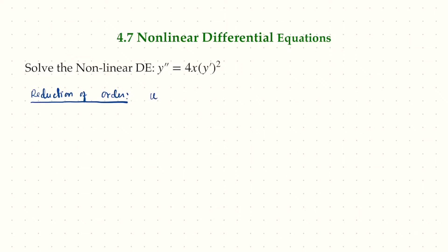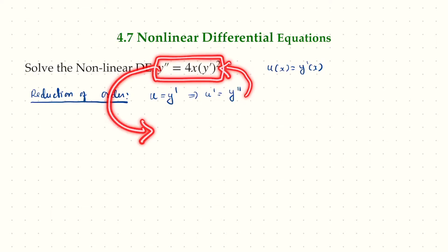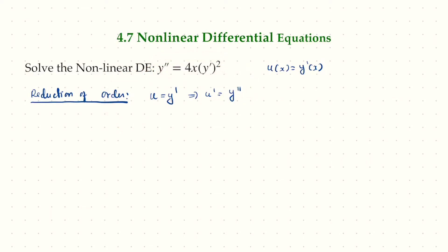For reduction of order, we set u equal to y prime, so u prime equals y double prime. Here, u is a function of x, which is y prime of x. When we say u prime, that means the derivative of u with respect to x, which is y double prime. Plugging this back into the differential equation transforms it into: u prime equals 4x times u squared. That's the first order reduction.